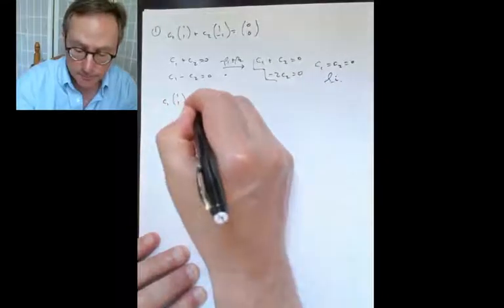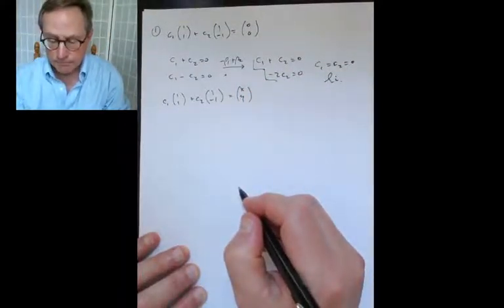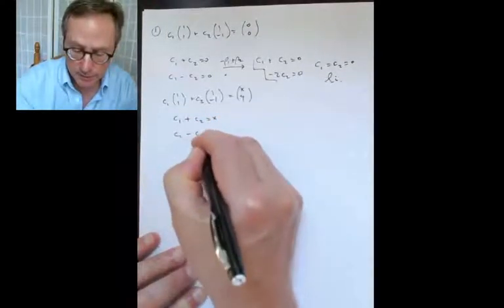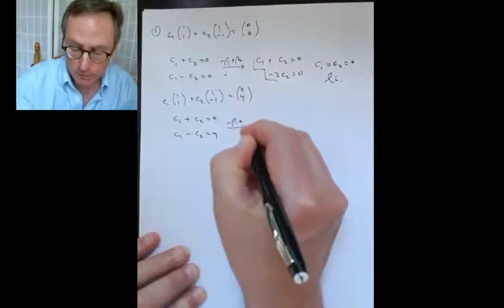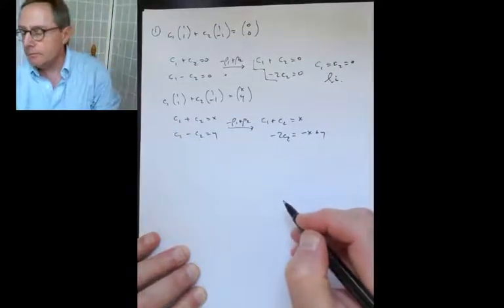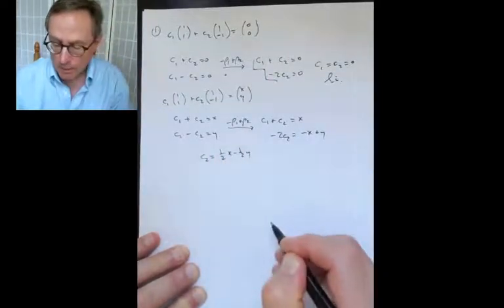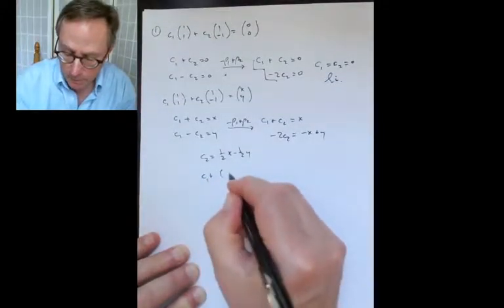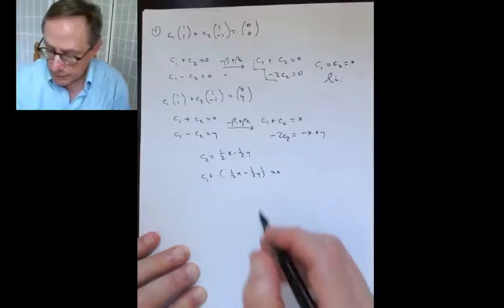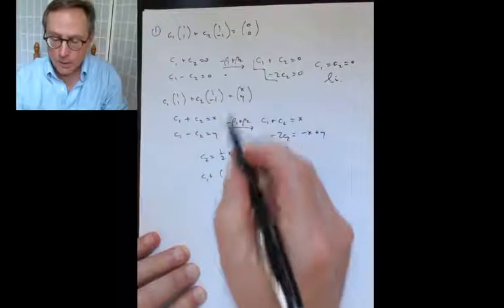Next, check span: given any (x, y), can we find c1 and c2? This leads to the same linear system. Row reduction gives c1 + c2 = x and -2c2 = -x + y. From that, c2 = (1/2)x - (1/2)y, and substituting back gives c1 = (1/2)x + (1/2)y. So for any given x and y we can find the appropriate c1 and c2, confirming the set spans the plane.